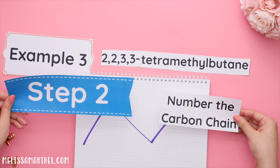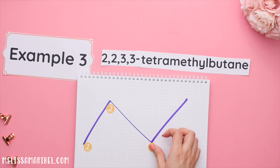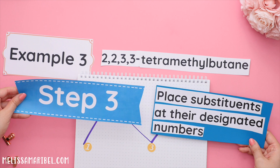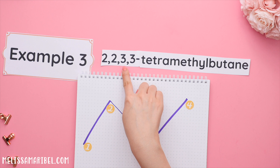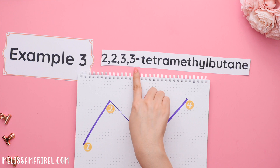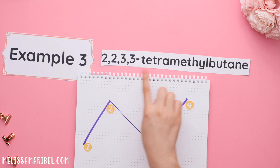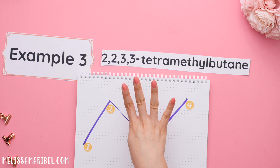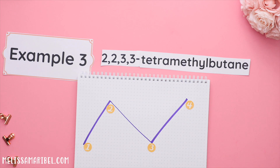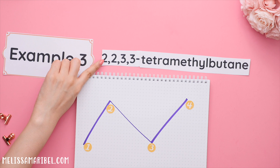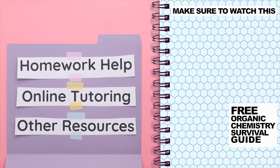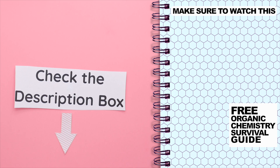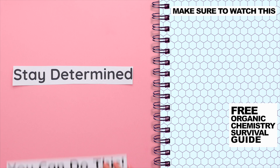Step two: number the carbon chain. I'll number the carbon chain from left to right. Step three: place substituents at their designated numbers. Whenever we have a number, then a comma, followed by another number, this tells us there's more than one of the same substituent. In this case, we have four numbers plus the prefix tetra — and tetra means four — so we must have four methyl groups since this is tetramethyl. Our numbers in front tell us we have two methyl groups on carbon two and two methyl groups on carbon three, and this is the proper structure. Now if you would like help on your homework, online tutoring, or other helpful resources, I have all of that and more in the description box. And remember, stay determined — you can do this.